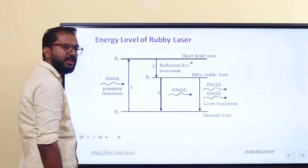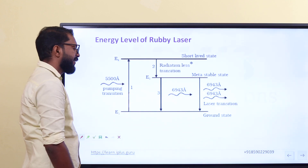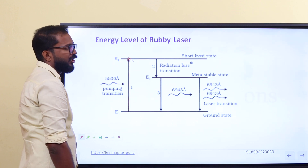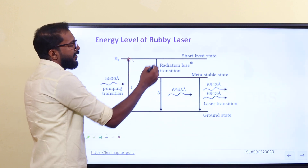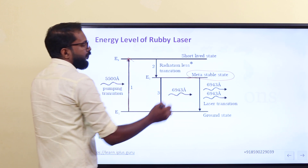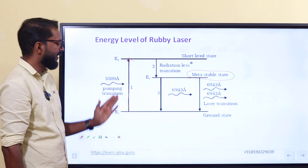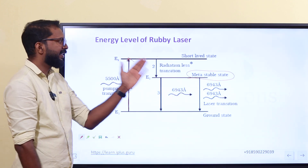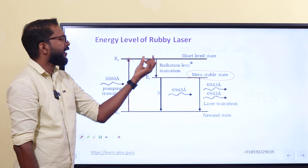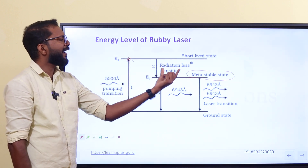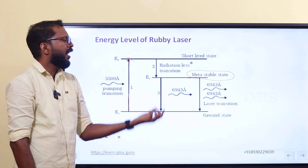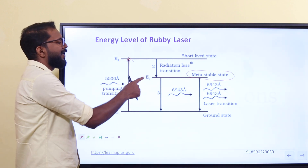A flash lamp is used to excite the chromium atoms. The excited chromium ions move to a short-lived state (E3), then undergo a radiationless transition to the metastable state. Because it is a radiationless transition, there is no radiation emitted at that stage. The ions accumulate in the metastable state.